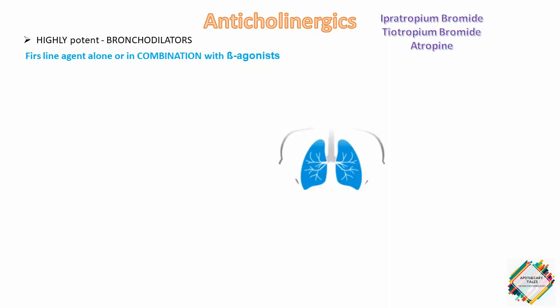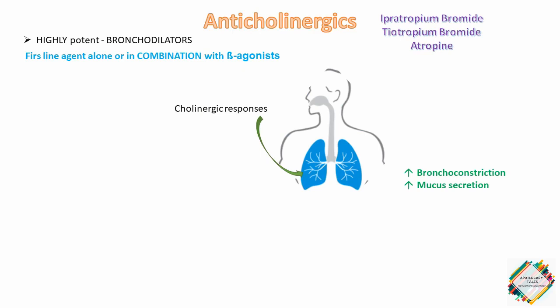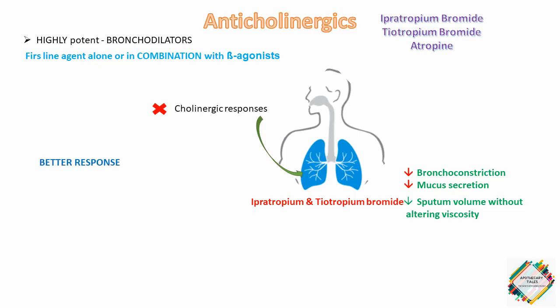Anticholinergics produce bronchodilation by competitively inhibiting the cholinergic responses. The usual cholinergic response acting on the lungs increases bronchoconstriction and mucous secretion. When anticholinergics are administered, they inhibit this response, thereby reducing bronchoconstriction and mucous secretion and causing bronchodilation. Ipratropium and tiotropium bromide additionally decrease sputum volume without altering viscosity. Some studies have shown an increased response when these agents are combined with beta-agonists. Tiotropium has greater affinity for cholinergic receptors than ipratropium.